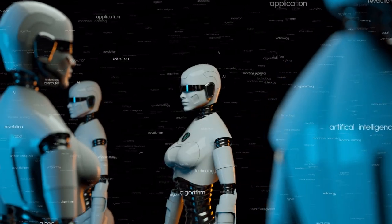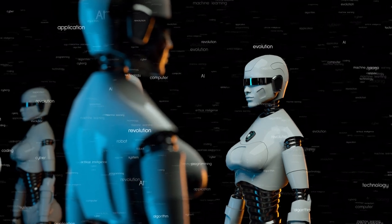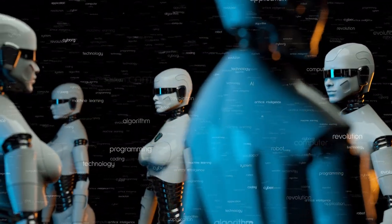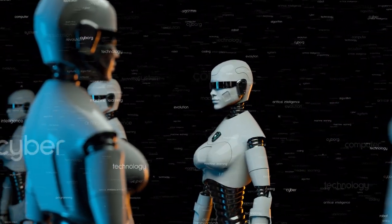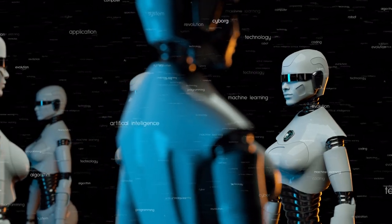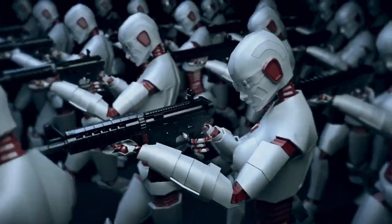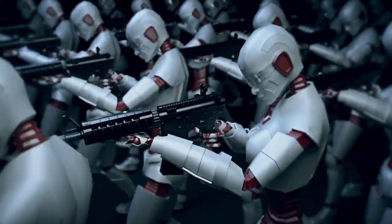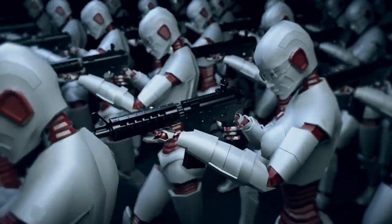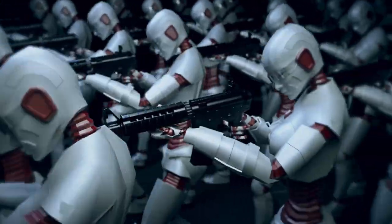Harari further explains that Israel's development of surveillance technology has made it easier to control the Palestinian population, leading to a shift away from the two-state solution towards a three-class system, where Jews enjoy full rights, Israeli Arabs have limited rights, and Palestinians have few civil and human rights. While some Palestinians characterize this as apartheid, Harari disagrees with the analogy.